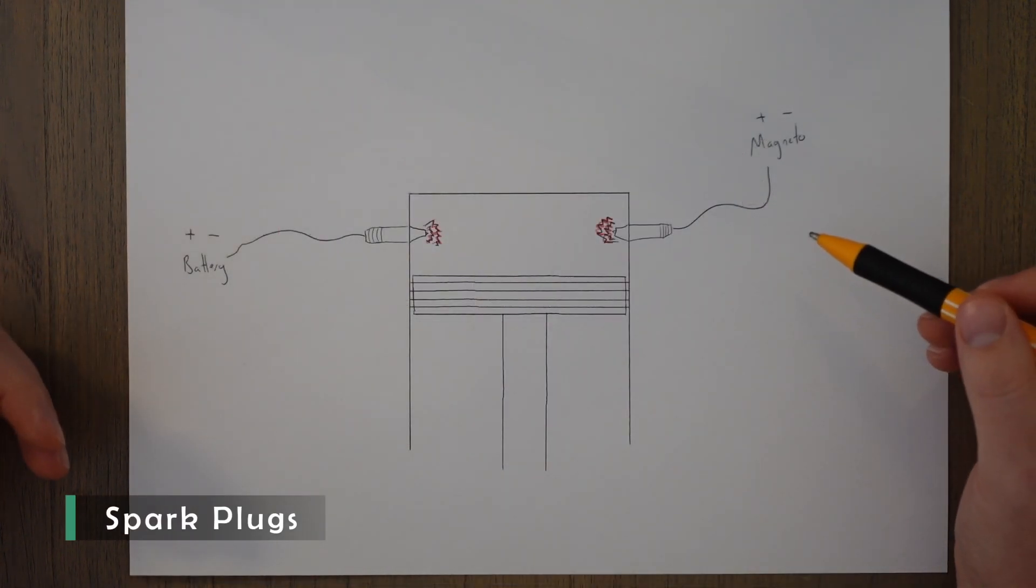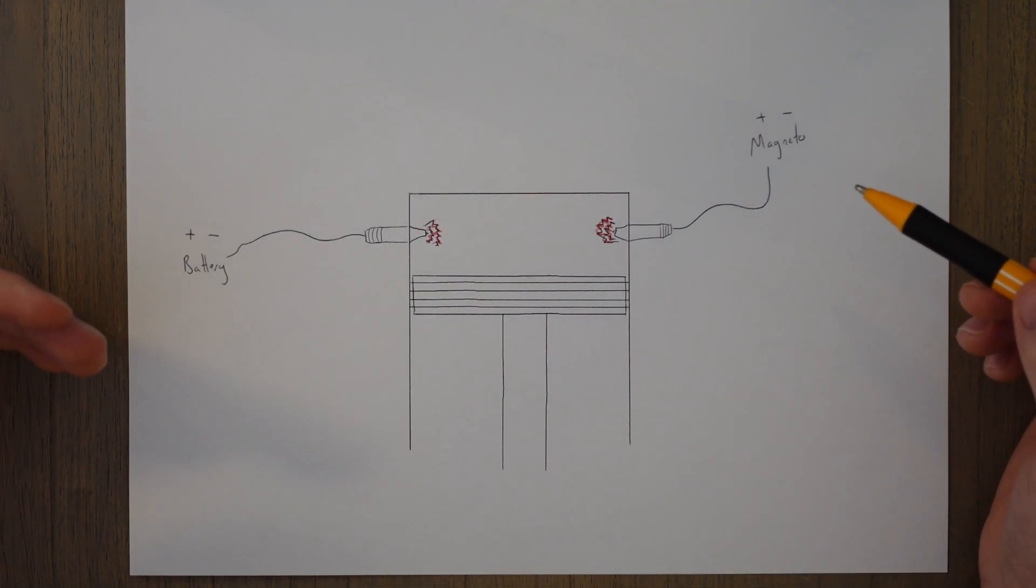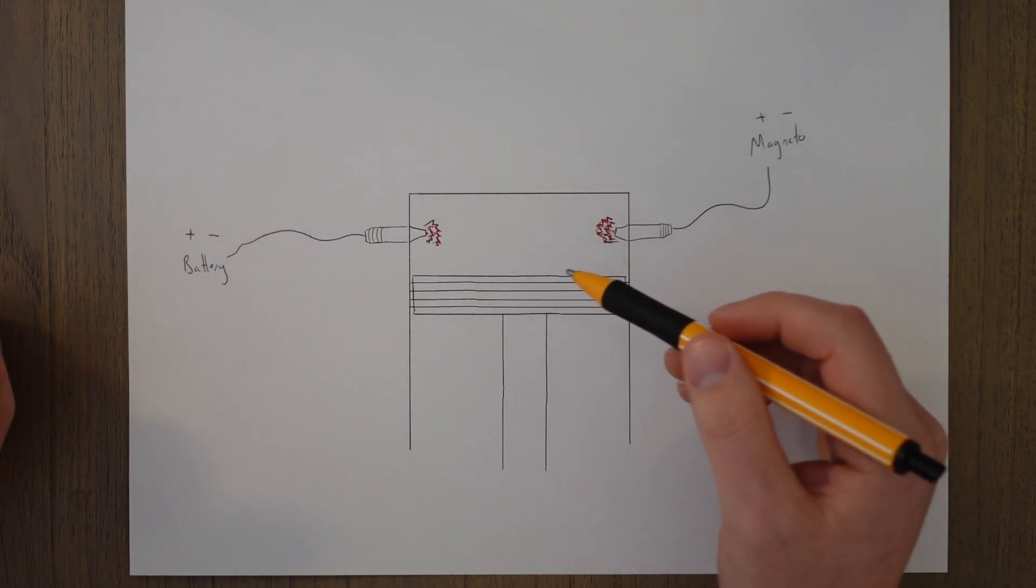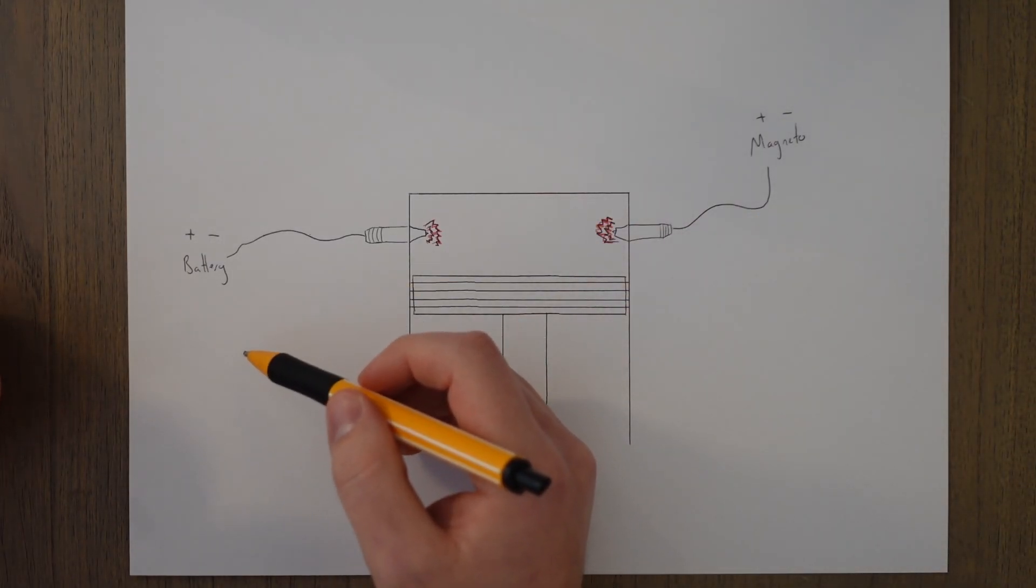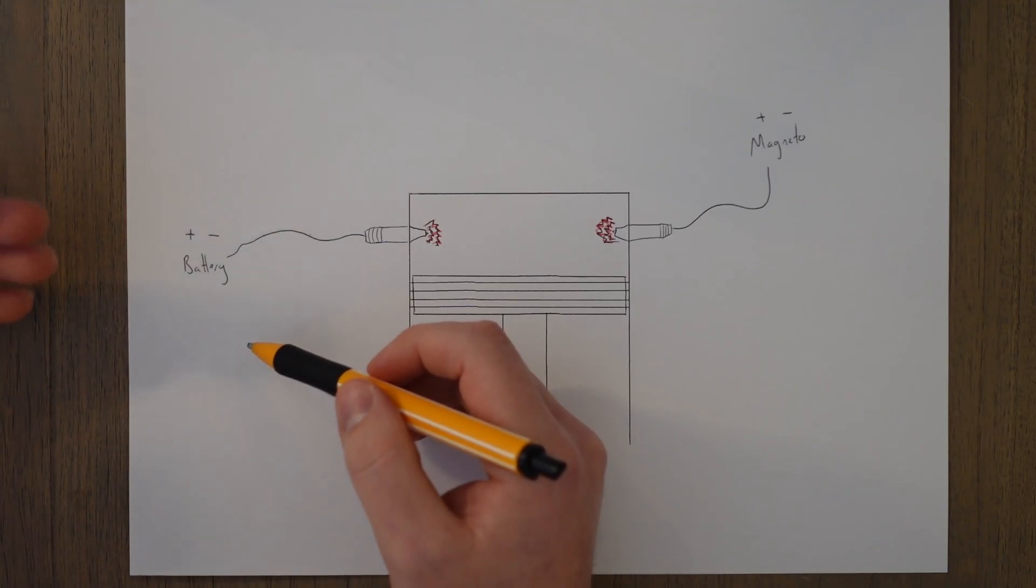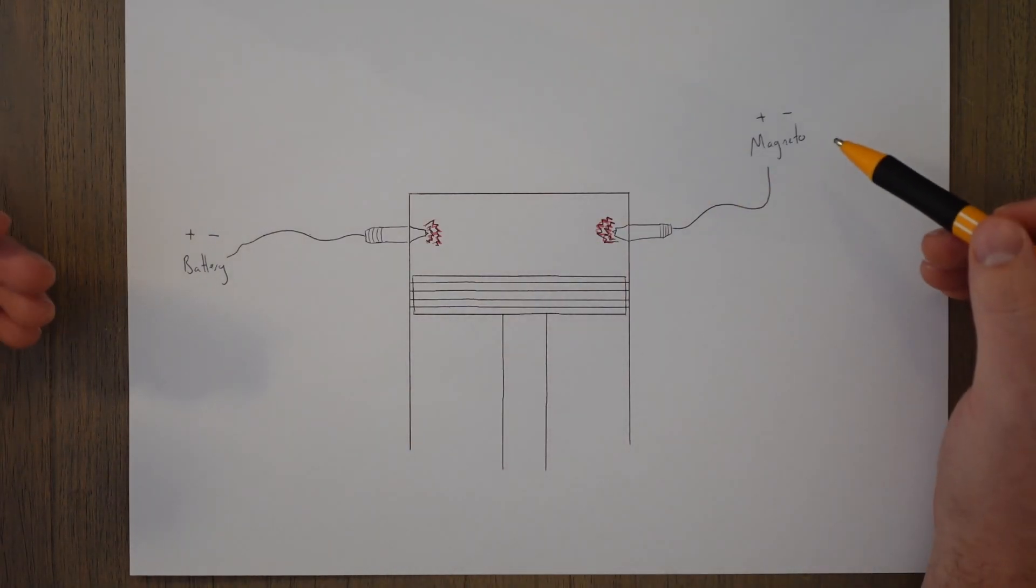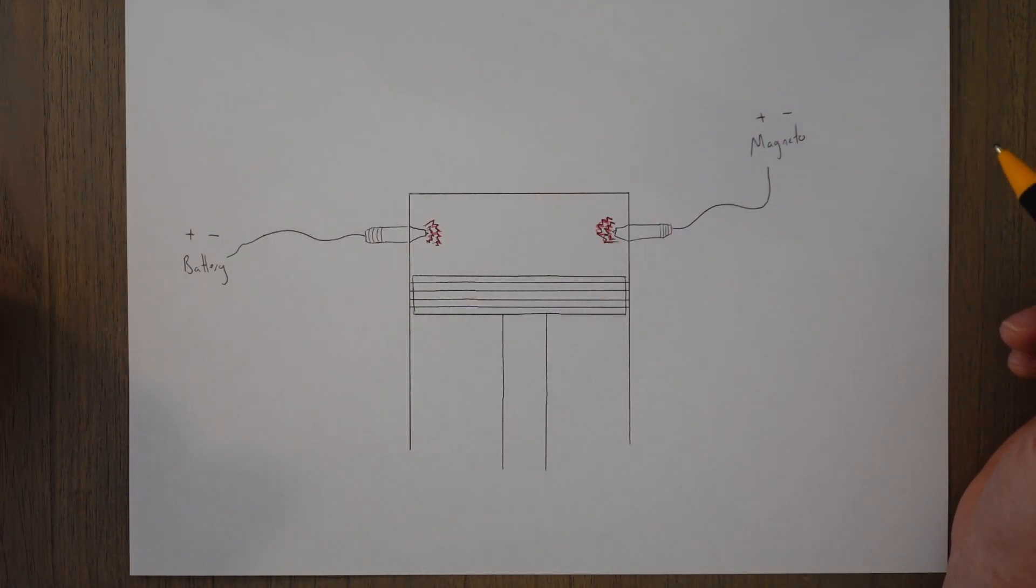Spark plugs use an electrical current to create a spark and ignite the air-fuel mixture in the cylinder. They draw their power from the battery, and the battery is charged up while the engine is running via something called an alternator, or a magneto system can be used which is independent of the battery, and we'll have a look at that in a bit more detail in the next class.